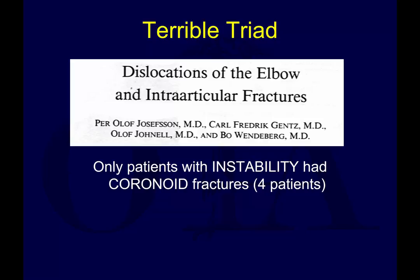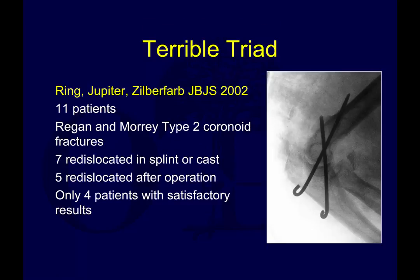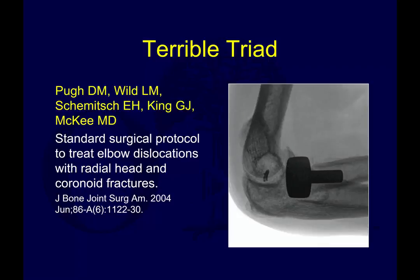Remember, patients with instability all had coronoid fractures. Here's an earlier paper by Drs. Ring and Jupiter — a case series of 11 patients with type 2 coronoid fractures. Seven re-dislocated in the splint or cast, and five re-dislocated after surgery, so pretty poor outcomes with that technique. The treatment we do today in 2017 is really very similar to a key study by our Canadian colleagues — Dr. Mike McKee, Graham King, Emile Chemetz — who helped demonstrate a very effective treatment protocol, which is more or less how we approach terrible triad injuries today.